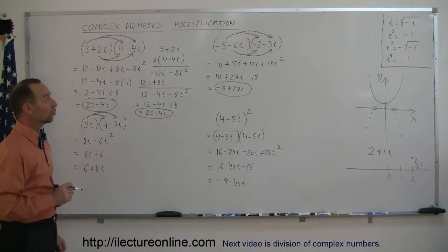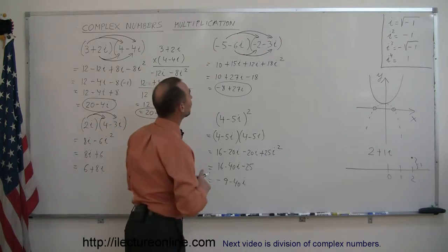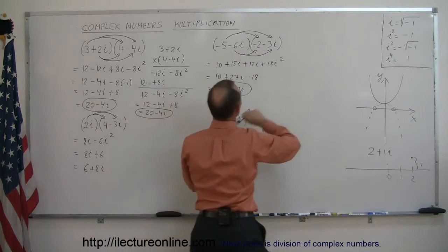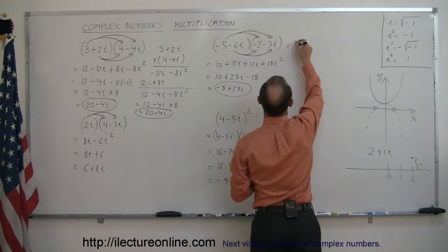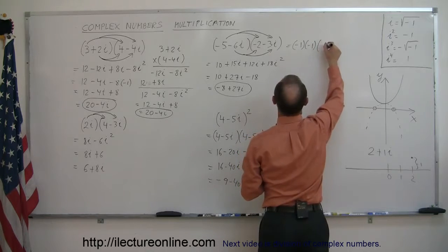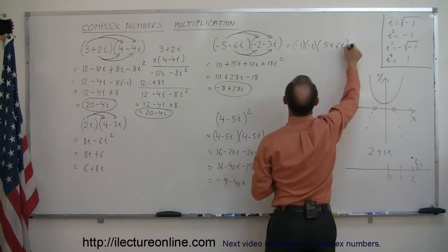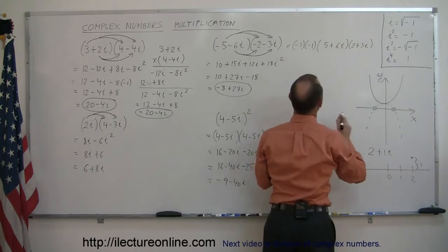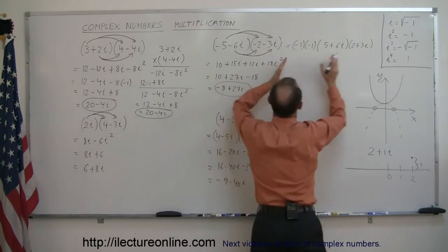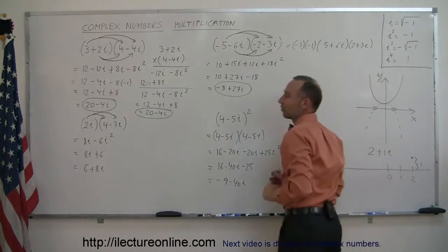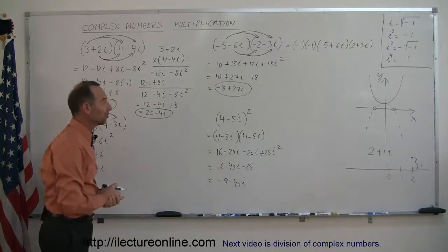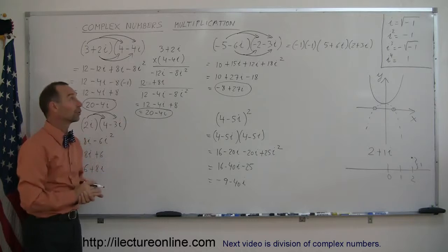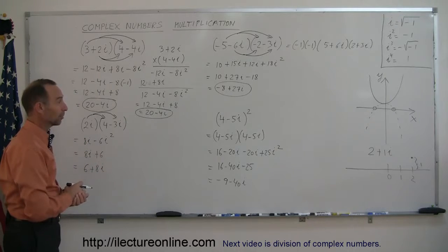Here's another little trick — going back to the third example, notice that we could have factored out a negative 1 from each factor, writing it as negative 1 times negative 1 times (5 plus 6i) times (2 plus 3i). Since negative 1 times negative 1 is positive 1, instead of dealing with all those negative signs, you could have written it with only positive signs, which makes it a bit easier. Anyway, this is how you multiply complex numbers, and in the next video we're going to show how to divide complex numbers.